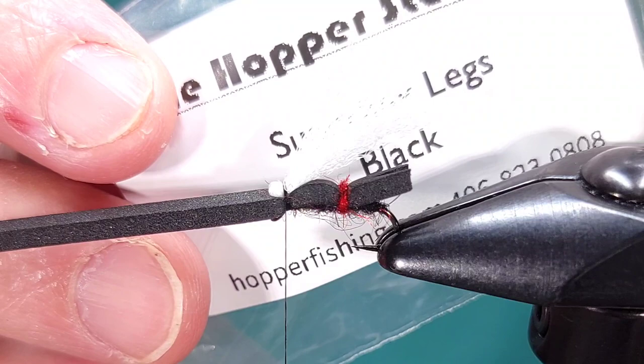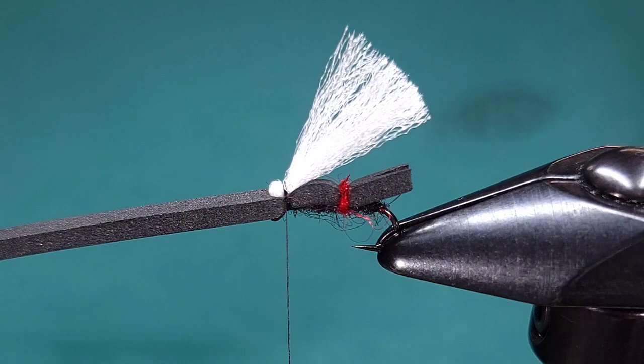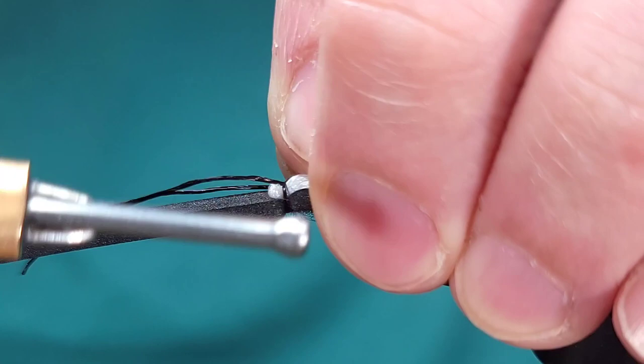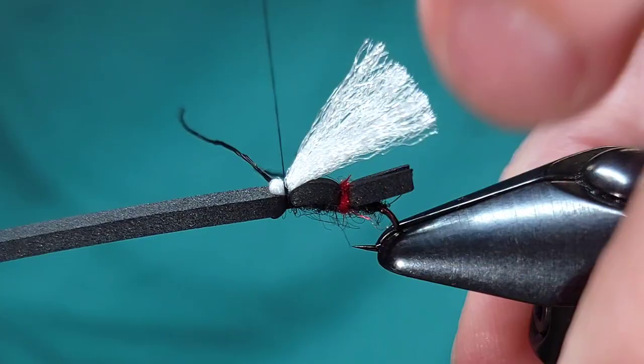For the legs I'm using super flex or sexy floss in black. And I'm just going to take for this specific pattern I prefer to take two pairs of legs and fold them over. So you just get a little bit more depth or something a little bit different about this fly in my opinion.